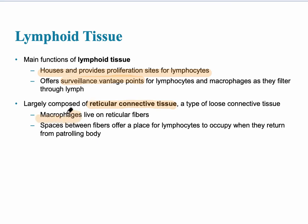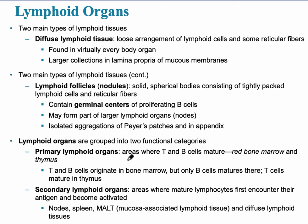Other lymphoid organs are found throughout the body. There is diffuse lymphoid tissue, found in virtually every body organ with a few exceptions. There are two types: spread out everywhere, or concentrated — when concentrated, it's referred to as a lymphatic follicle or lymphatic nodule. These terms mean the same thing: tightly packed lymphoid cells and reticular fibers. Within the follicle there is a germinal center, meaning growth, where there are proliferating B cells.